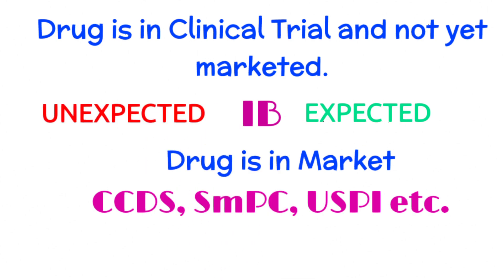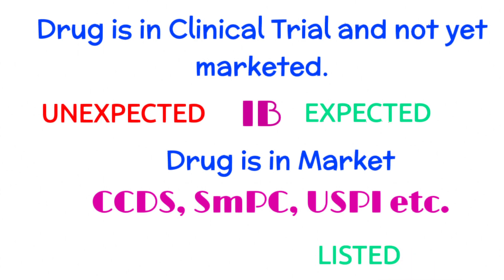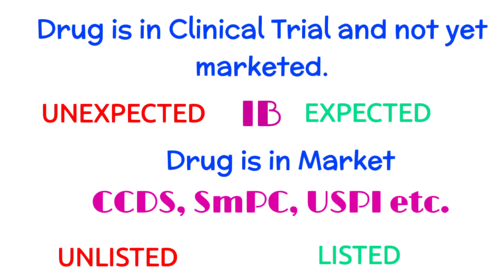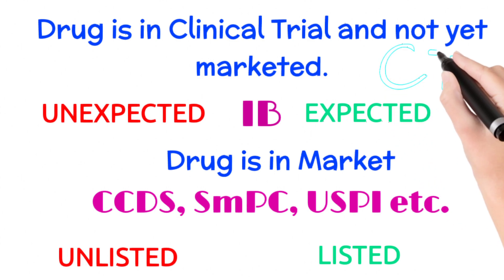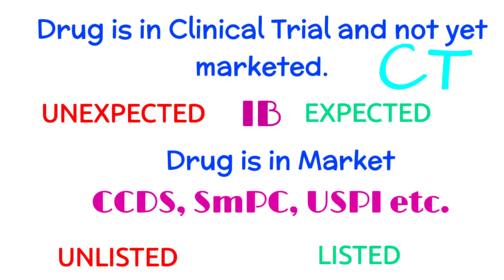However, if an event is reported in CCDS, SmPC, USPI, etc., then that event is a listed event; if not reported, it is an unlisted event. So the terms expected and unexpected are used for clinical trial reports, which means for drugs that are not yet marketed. And the terms listed and unlisted are used for other than clinical trial reports, which means for drugs which are in the market.